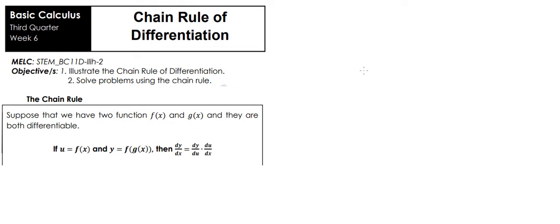When you say chain rule, from the word itself, that means we don't have only one function. We have two or more functions. Let's suppose that we have two functions, f of x and g of x, and they are both differentiable.